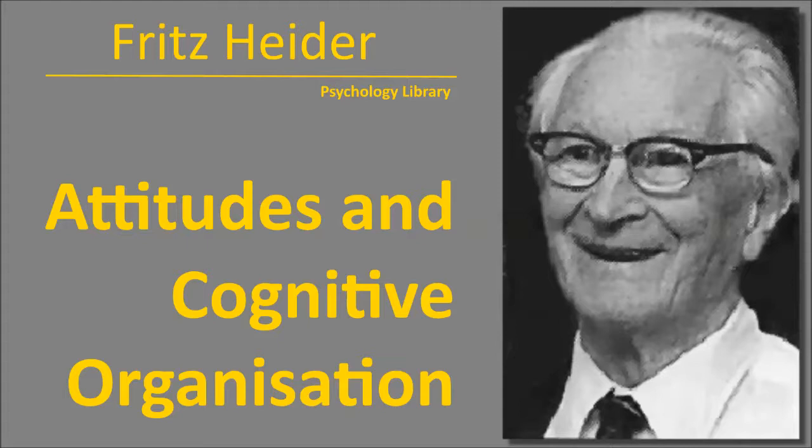The question arises whether, with a triad, one can make any generalizations about balanced cases with negative relations. For instance, P L O plus O tilde U X plus P tilde L X is balanced — P likes O because O got rid of something P dislikes. In this case two entities P and O are positively related to each other, while both are related negatively to the third entity X. This statement can be derived from the assumption that L and U are, in a balanced configuration, exchangeable, symmetrical, and transitive. L and U can then be treated as formally analogous to an identity relation.